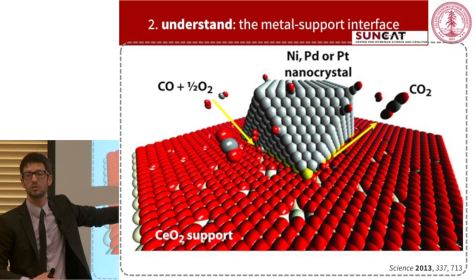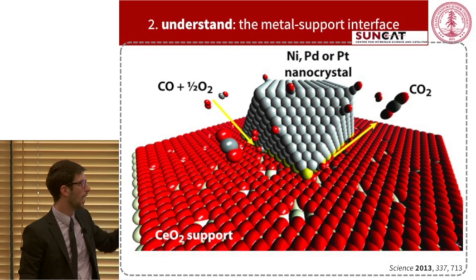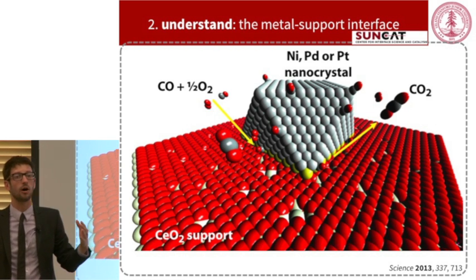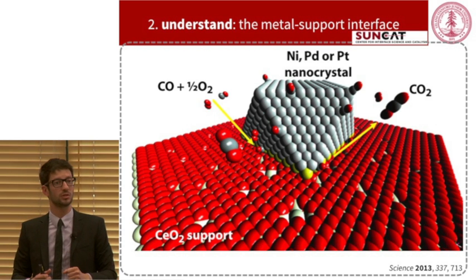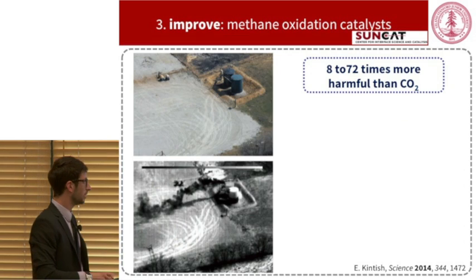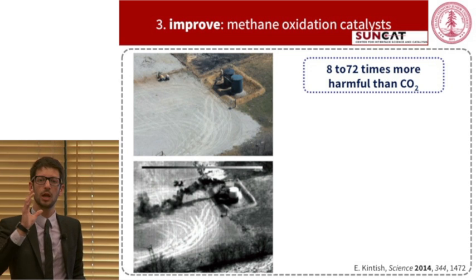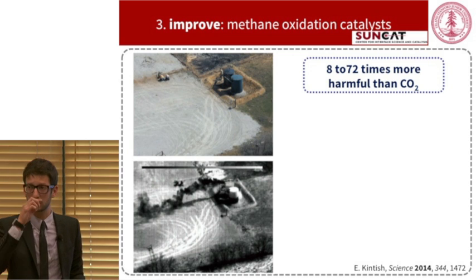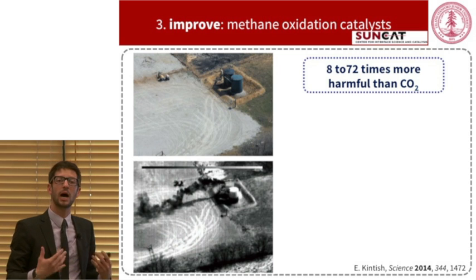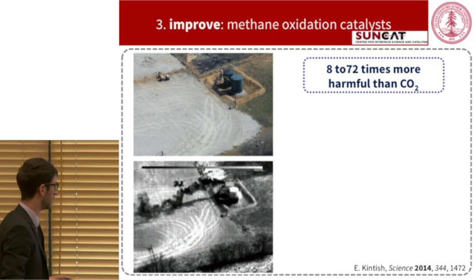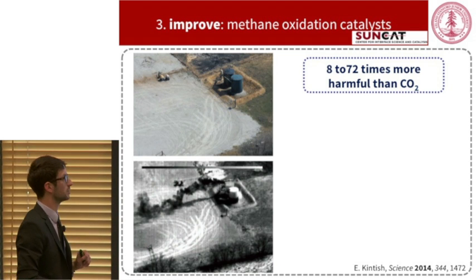Now that we know those interface sites are the most active sites for the reaction, we can go back to synthesis and prepare better catalysts based on this knowledge. This is the idea of understanding — after we control, understanding the structures — and using that knowledge to prepare better systems. This leads me to the final part of my talk: how do we improve catalysts based on that knowledge? I want to address one particular transformation, which is methane oxidation.